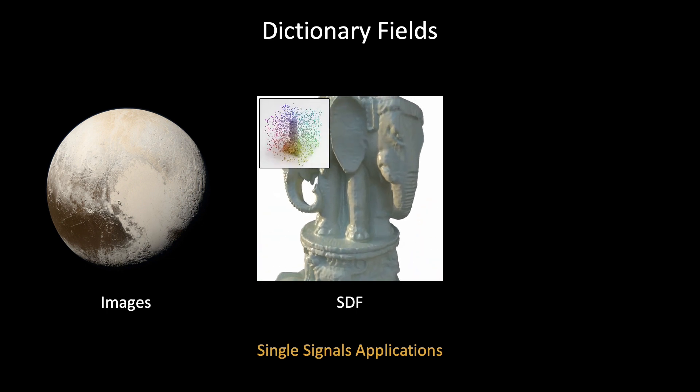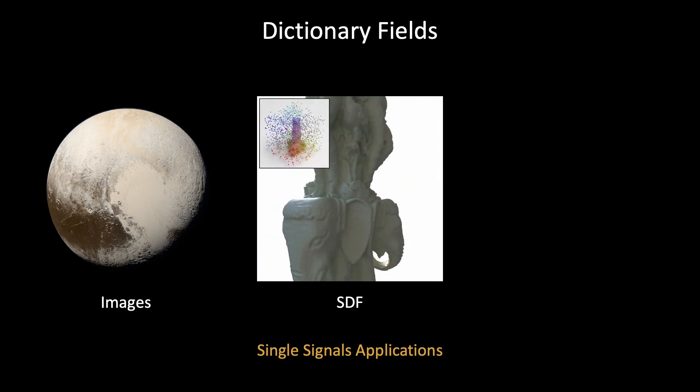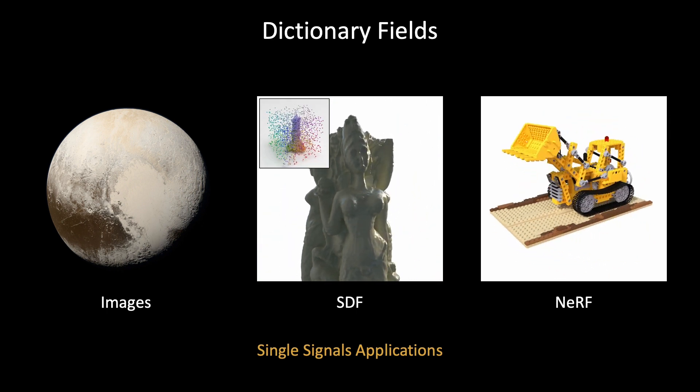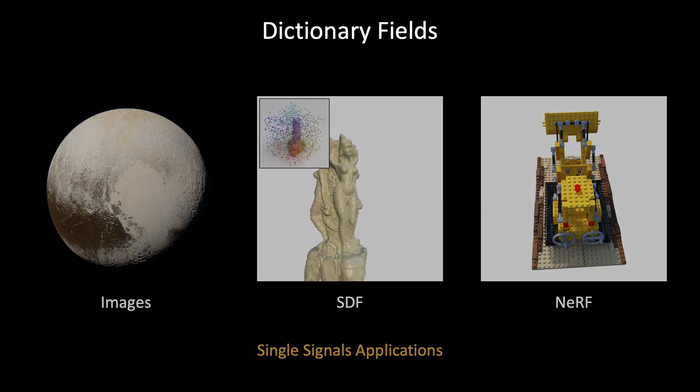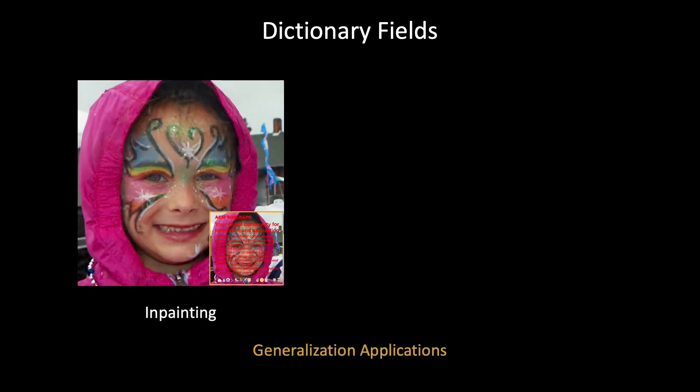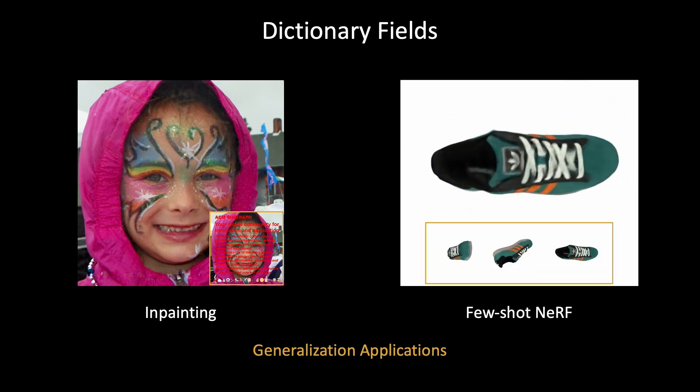Higher geometric quality when reconstructing 3D signed distance fields, and higher compactness for radiance field reconstruction tasks. Additionally, our dictionary field enables generalization to unseen images and 3D scenes by sharing bases across signals during training, which greatly benefits use cases such as image regression from sparse observations and few-shot radiance field reconstruction.